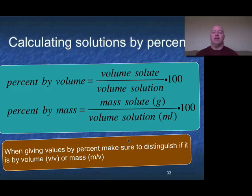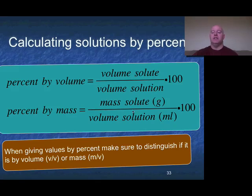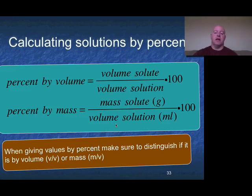Other ways we can calculate concentrations are by percentages. There are two ways: percent by volume and percent by mass. For percent by volume, it's the volume of your solute over the volume of your solution. For percent by mass, same idea but we use mass of solute over volume of solution, working with grams and milliliters to keep the ratio correct. You'll notice that people label these V/V or M/V to tell you if it's been done by volume or by mass, because different densities give different numbers.